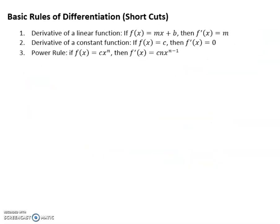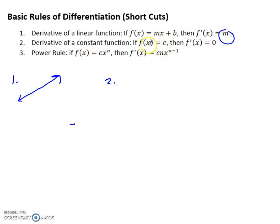There are some shortcuts for doing the derivative. Number 1: if it's a linear function, the slope is the same the whole time — it's just the slope of the original graph. Number 2: the derivative of a constant, like f of x equals 5, is always 0, because it's a horizontal line. Number 3 is the power rule: if you have x to a power n, multiply the front by n and then take the exponent down by 1.